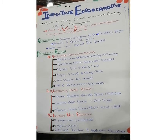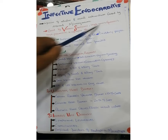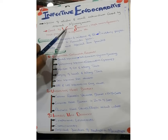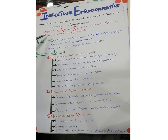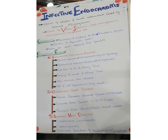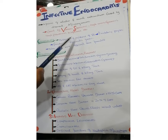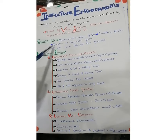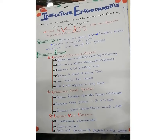Infective endocarditis is caused by different microorganisms. The most common bacteria include Streptococci, Staphylococci, Gonococci, Streptococcus pneumoniae, H. influenzae, and many others. Regarding epidemiology, although antibiotics have reduced incidence, infective endocarditis incidence has increased in elderly people due to low immunity and low tolerance to bacteria. Infective endocarditis is usually secondary to rheumatic fever, and males are more affected than females.